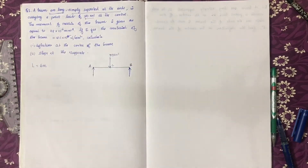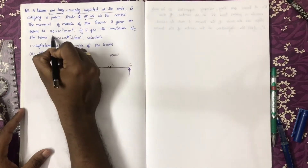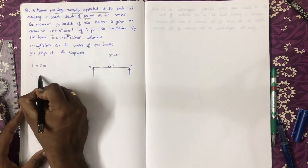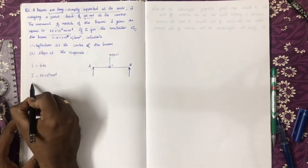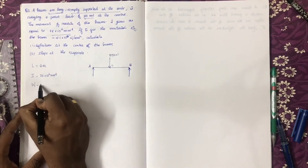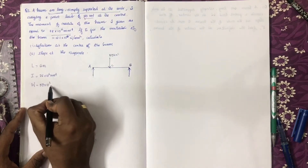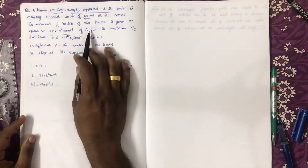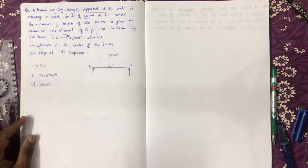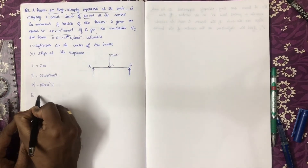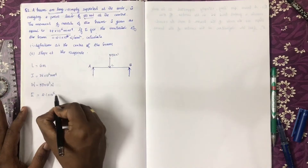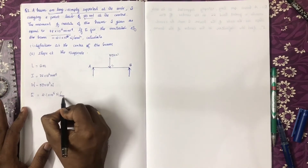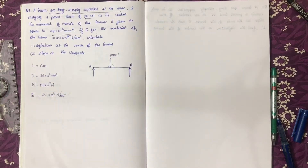The moment of inertia of the beam is given as I = 78 × 10⁶ mm⁴. The modulus of elasticity E for the material of the beam is 2.1 × 10⁵ MPa (Newton per millimeter square).